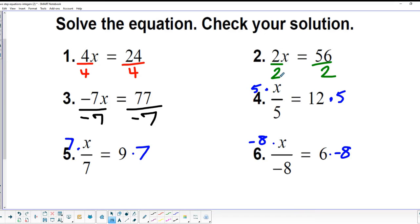So in the first one, we're going to divide by 4. Number 2, we're going to divide by 2. Number 3, divide by negative 7. Number 4, we're going to multiply by 5. Number 5, we're going to multiply by 7. And number 6, of course, we're going to multiply by negative 8.